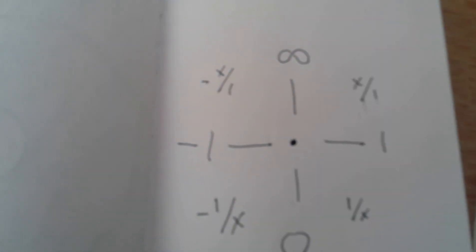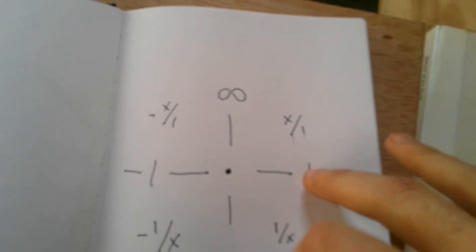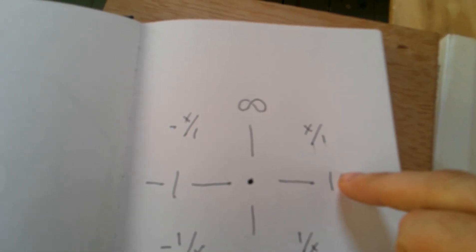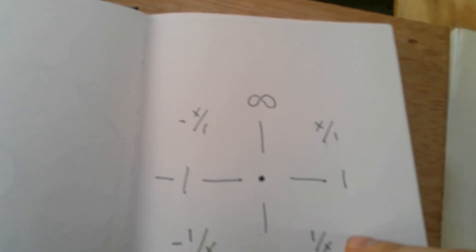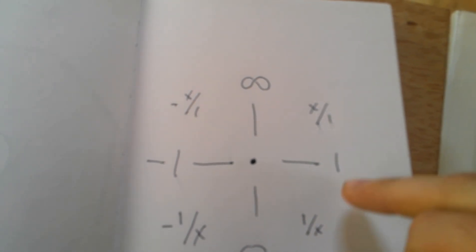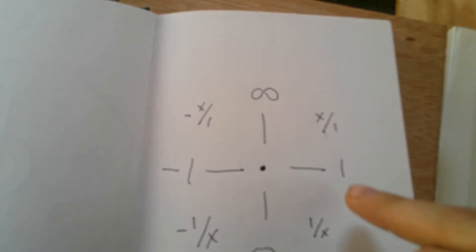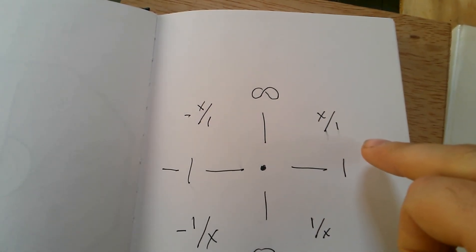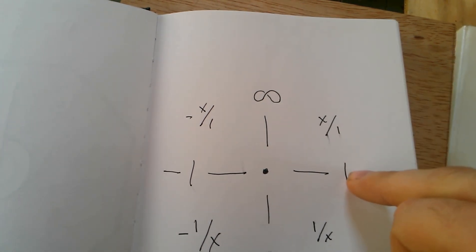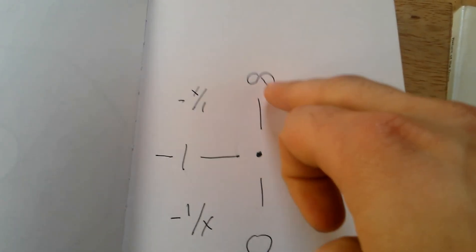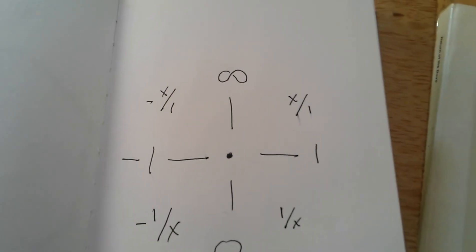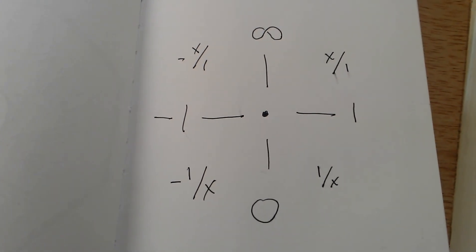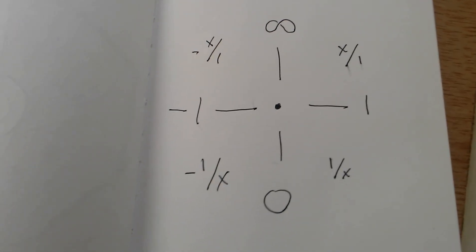Infinitely large, infinitely small, and then the midpoint between those two, which is one — the whole. You have x up here and the inverse of x down here. That's a spectrum of one to infinity, and this is a spectrum of one to zero, but they're inverses of each other. It's important for understanding greater than the whole versus less than the whole.